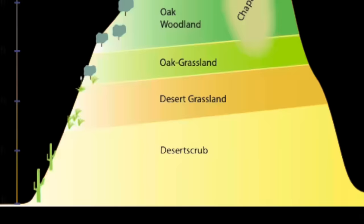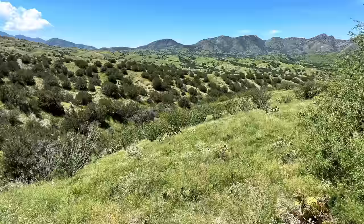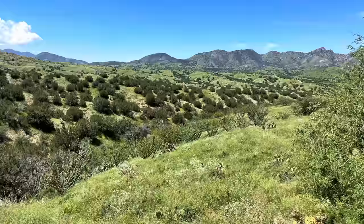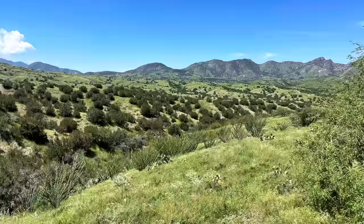Next up we have the desert grasslands, between about two to three thousand feet above sea level. Lots of grass here, very cool during monsoon season, lots of flowers. This is also where you're going to find species of mesquite trees as well as yuccas.